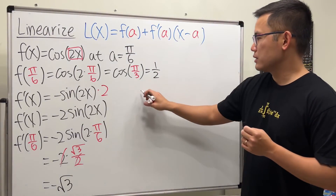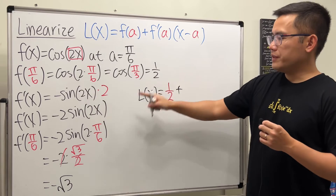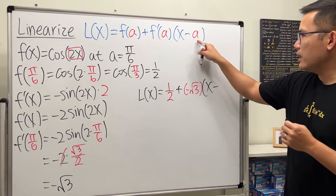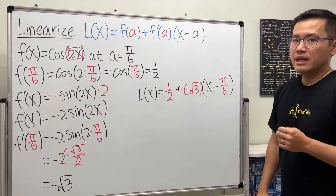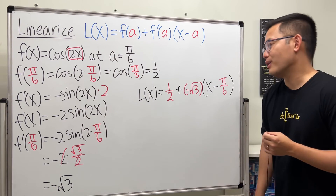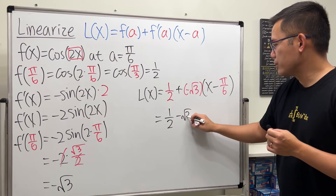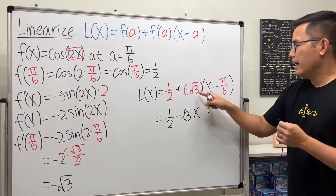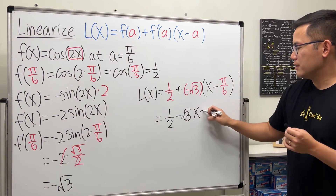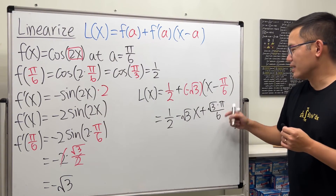Now plug into the formula. L of x equals f of a which is one half, plus the derivative which is negative square root of 3, times x minus a which is pi over 6. Distributing: we get one half, minus square root of 3 times x, and then negative times negative pi over 6 gives plus square root of 3 times pi over 6.